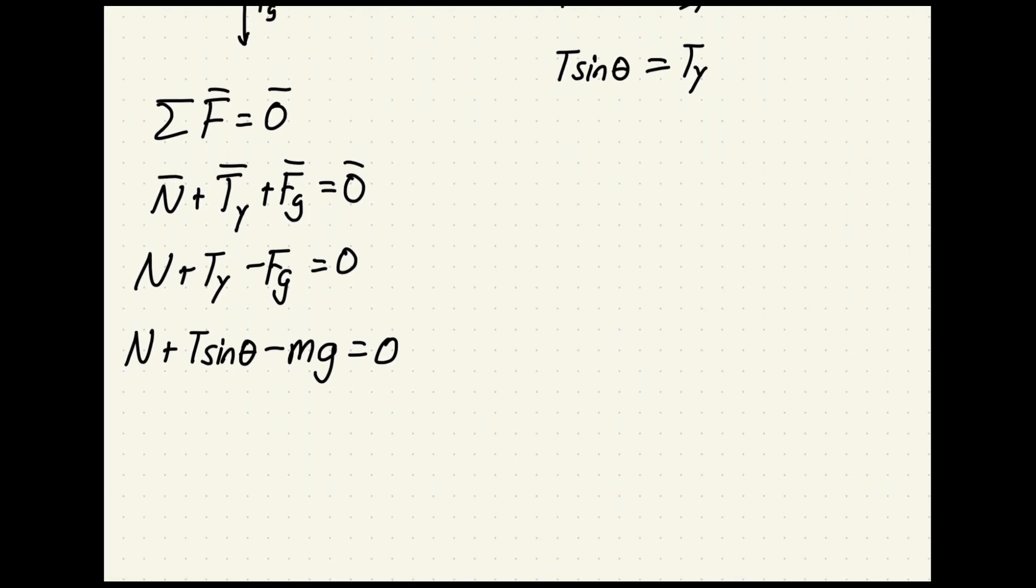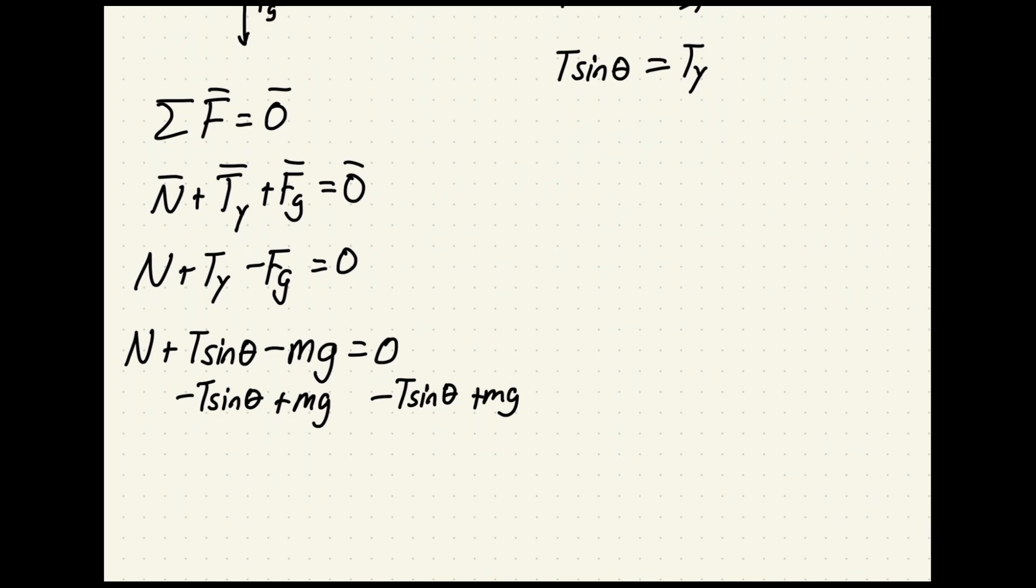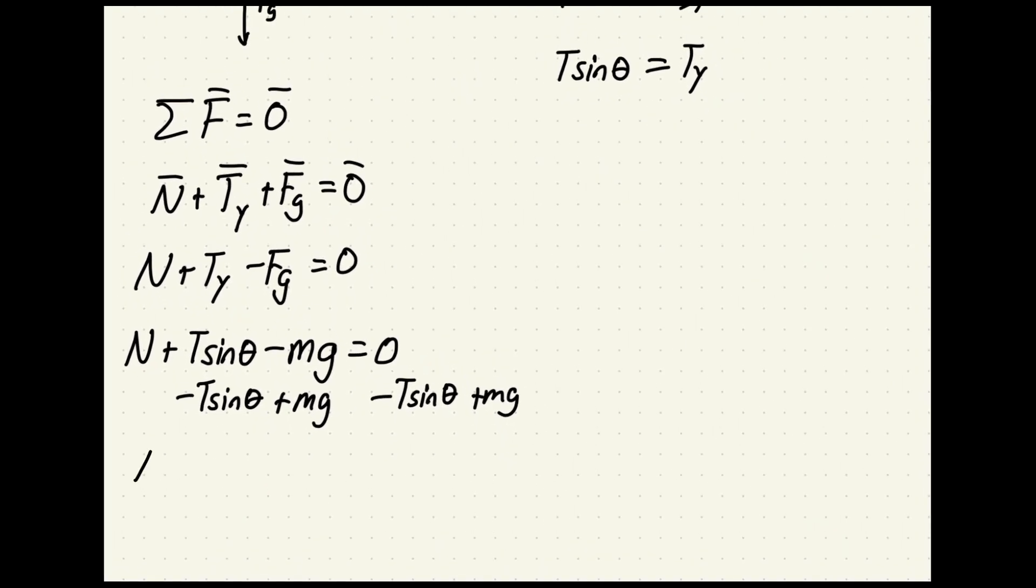We are trying to solve for the normal force and so from here it's pretty straightforward. We just have to isolate that N, and to do that we will subtract T sine theta and we will add mass times gravity. We do that to both sides of the equal sign, so I subtract T sine theta and we add mg. And my next step is to rewrite this as my normal force equal to mg minus T sine theta.